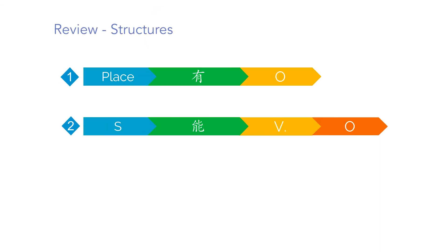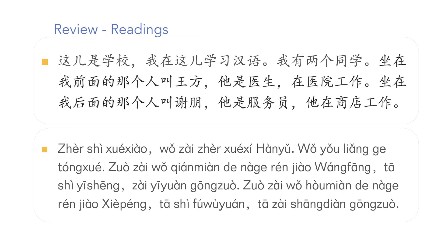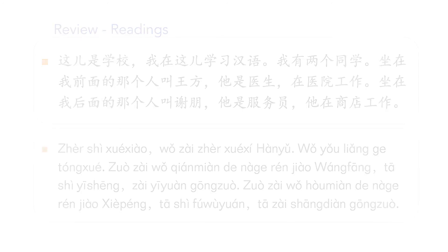Now you have learned how to express a request or ask for permission in Chinese. We have learned the following structures — please review them by yourself. And today, here is your homework: try to describe your room and put your description in the comments. I will help you correct it if you make a mistake. If you have any questions, please leave us a message. Next lesson, we will learn how to talk about weather in Chinese. This is Jessica. See you next time. Bye!